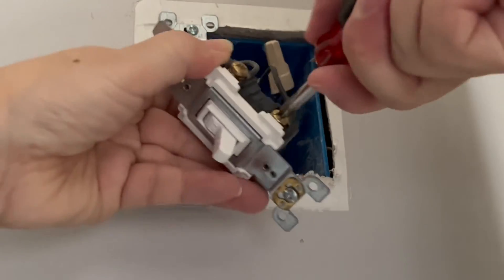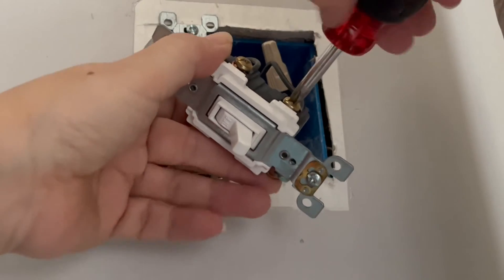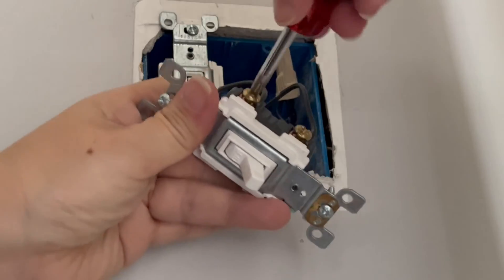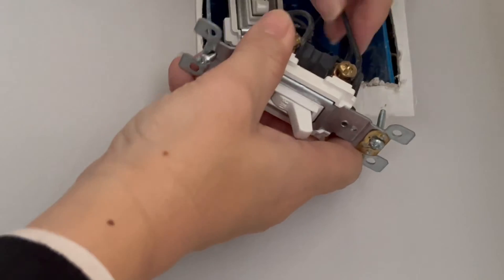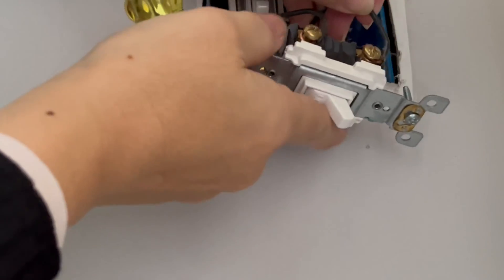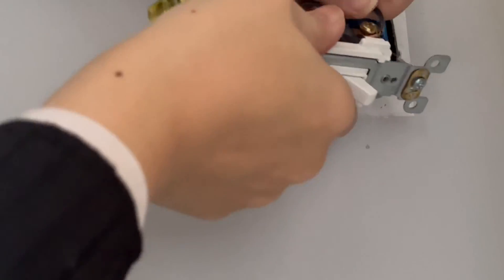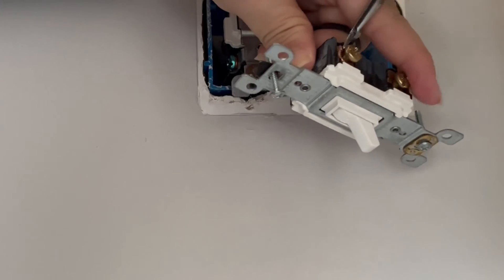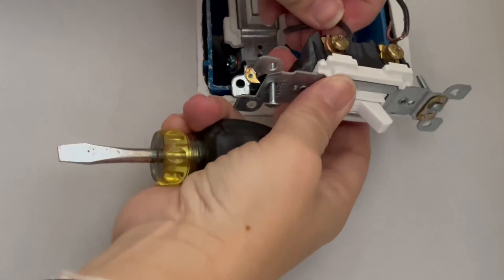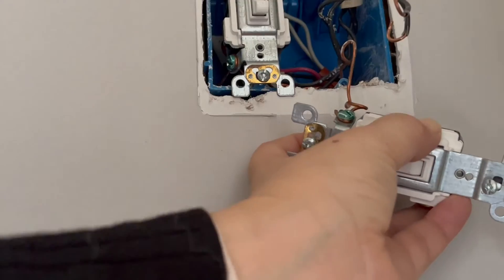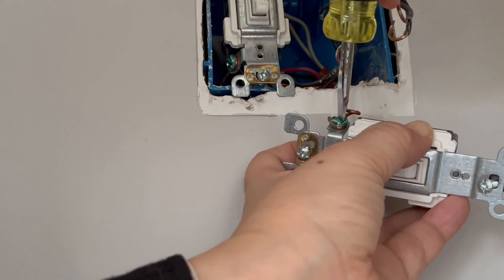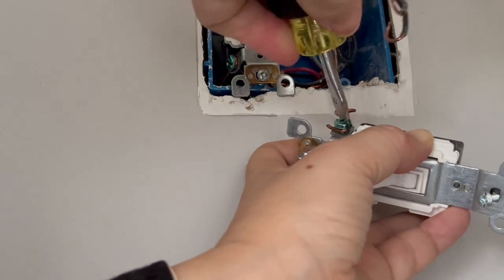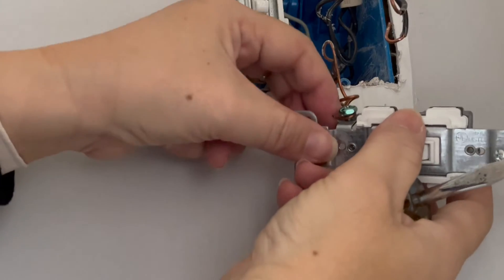This is a single pole switch, and that just means that there is only one switch that turns the light on or off, and I'm going to replace it with a single pole dimmer. Now, many homes have lights that can be turned on or off by a switch located in the same room and also by another switch located in another part of the house. For example, I can turn on my hallway lights from the switch at the front door and the switch at my back door. These use a three-way switch, and to replace these switches you will need to purchase a three-way dimmer, not a single pole dimmer.